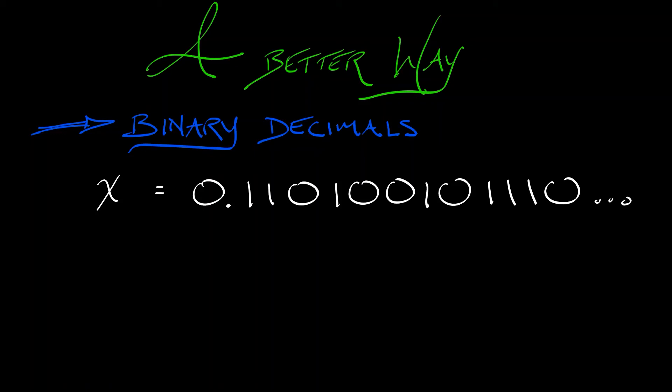Now what does this mean? Well, this is just like decimals with base 10, but the first term is the halves term, then the quarter term, then the one-eighth term, then a one-sixteenth term. I can just add all of these up to get what that number x is.